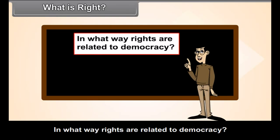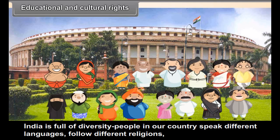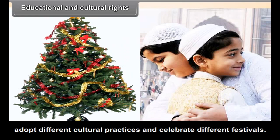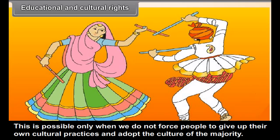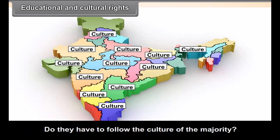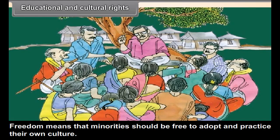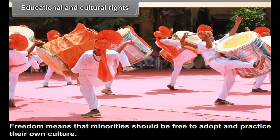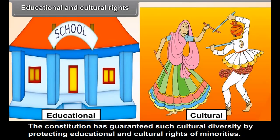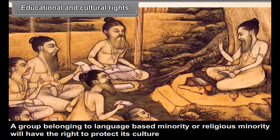In what way are rights related to democracy? Educational and cultural rights: India is full of diversity. People in a country speak different languages, follow different religions, adopt different cultural practices and celebrate different festivals. This is possible only when we do not force people to give up their own cultural practices and adopt the culture of the majority. In every part of the country, some cultural or linguistic groups will be in a minority. Freedom means that minorities should be free to adopt and practice their own culture. The Constitution has guaranteed such cultural diversity by protecting the educational and cultural rights of minorities. A group belonging to a language-based or religious minority will have the right to protect its culture and to form educational institutions.